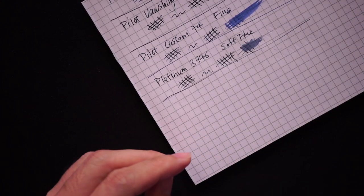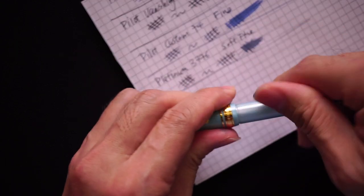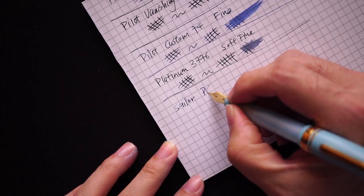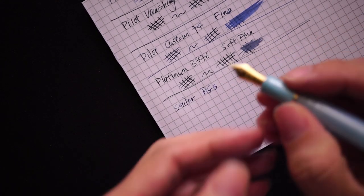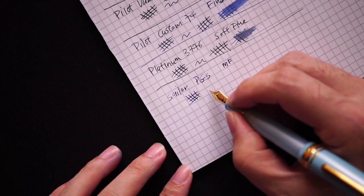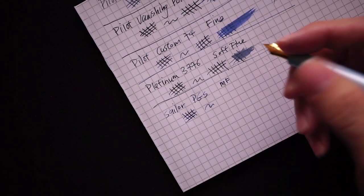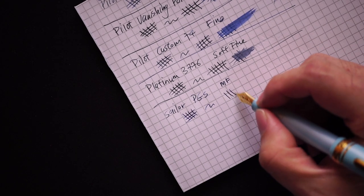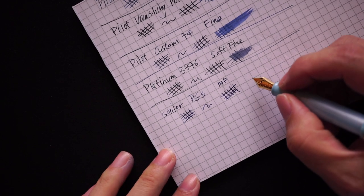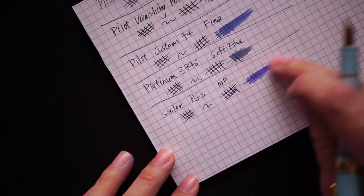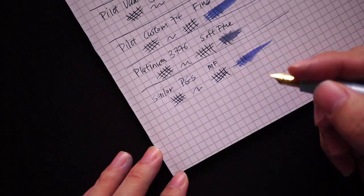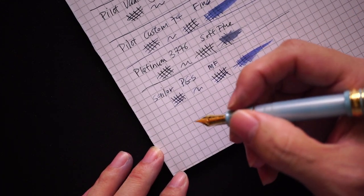The next pen would be the Pro Gear Slim. The Pro Gear Slim is actually, I'm just going to say PGS. This nib, if I'm not wrong, is actually the Medium Fine. It's kind of the in-between nib. In terms of feeling of smoothness, it's in-between the Pilots and the 3776. It is feedback-y, but the feedback is not as great as the Platinum. It's kind of in the middle between these two pens. It's a very pleasant writer and a very reliable writer as well.